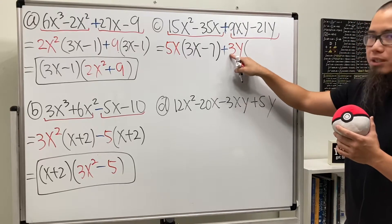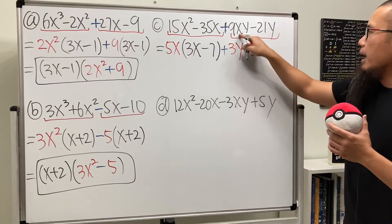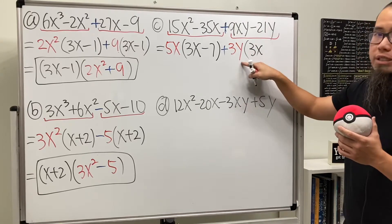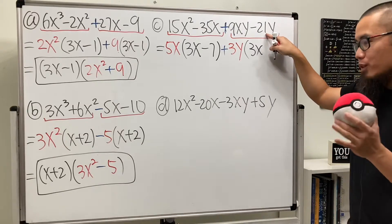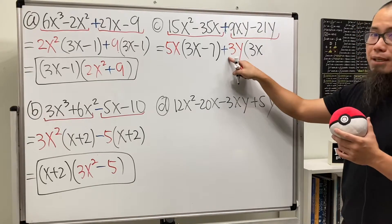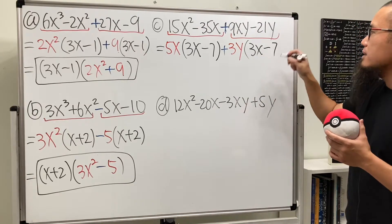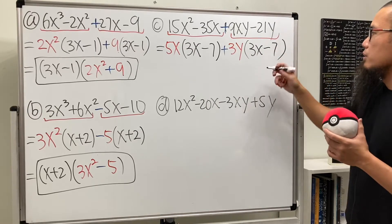And we get what? 9 divided by 3 is 3. x is left inside. And the y is on the outside already. All right. So this is negative 21 divided by 3, we have minus 7. And then the y is out already. So that's what we have.